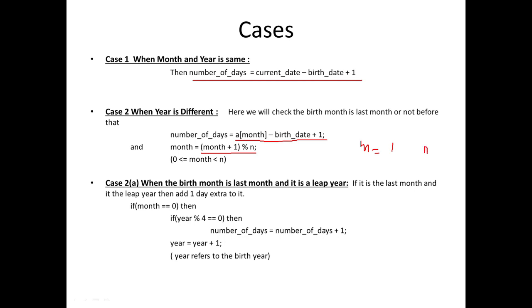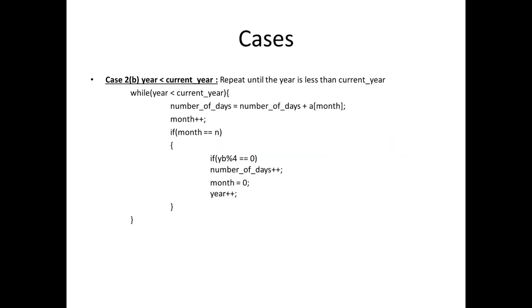For example, if N is 2 and month is 1, after incrementing it becomes 2, and 2 modulus 2 is 0, which specifies we've reached the last month. If month is 0 — meaning it was the last month — and the year is a leap year, then the last month will contain an extra day, so we add one to the number of days and increment the year by one.